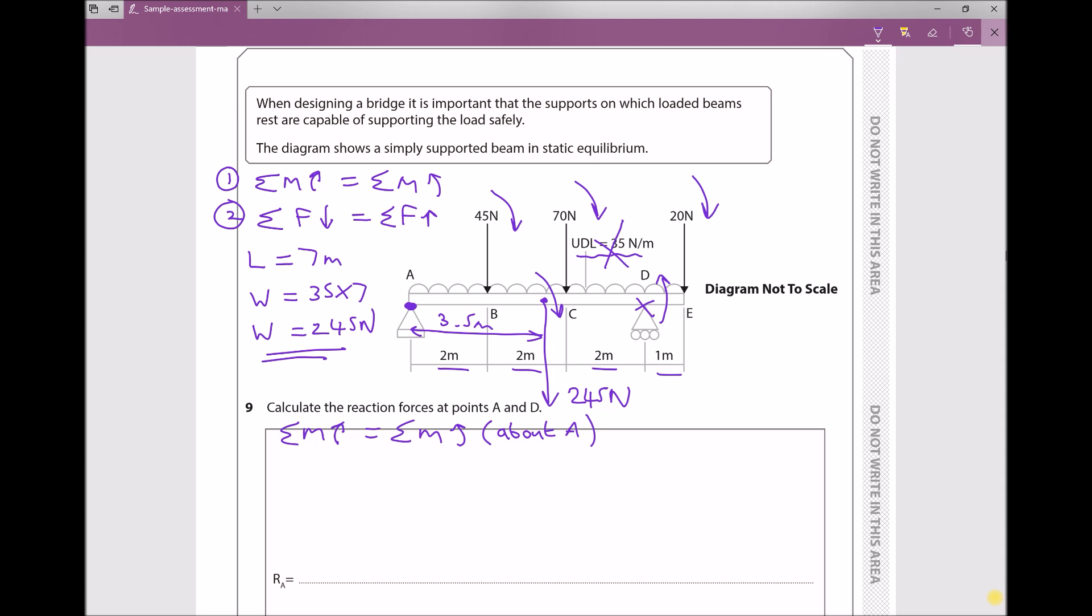The reaction force at point D. So sum of the clockwise moments, and a moment is a force times a distance. So we have 45 newtons and the 45 newton force is 2 meters from the pivot. To that we're going to add the 70 newton force and the 70 newton force is 4 meters from the pivot.